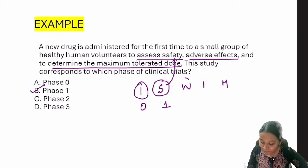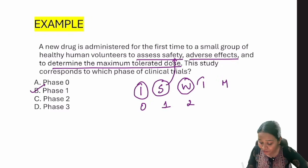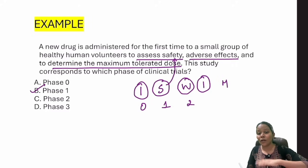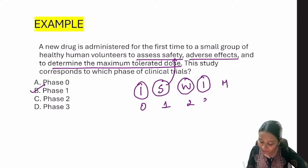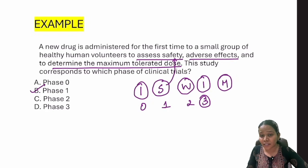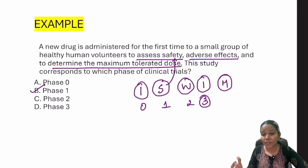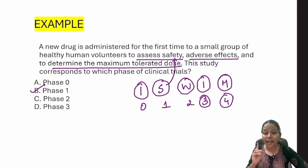'S' stands for safety — and safety is mentioned in the question. So the answer is Phase 1. If words like efficacy or effectiveness appeared, it would be Phase 2. If two groups were described with one receiving the drug and one not, it would be Phase 3 (RCT). If post-marketing surveillance or the longest evaluation phase were mentioned, the answer would be Phase 4. You should not get any question on this topic wrong.